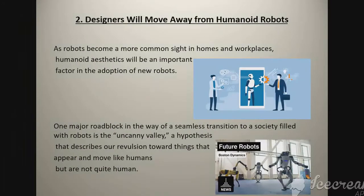Second, designers will move away from humanoid robots. As robots become a more common sight in homes and workplaces, humanoid aesthetics will be an important factor in the adoption of new robots. One major roadblock is the uncanny valley — a hypothesis that describes our revulsion towards things that appear and move like humans but are not quite human.